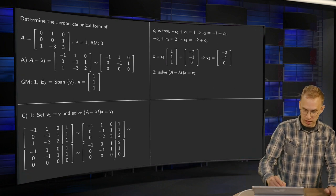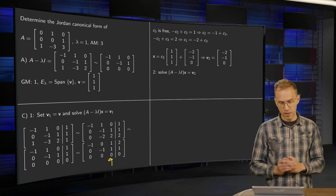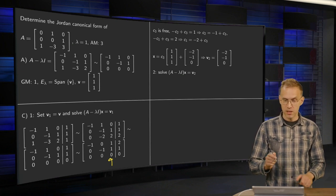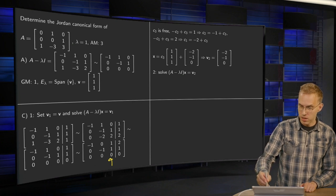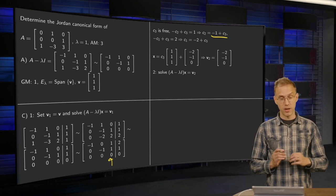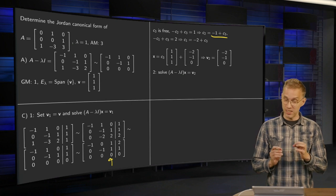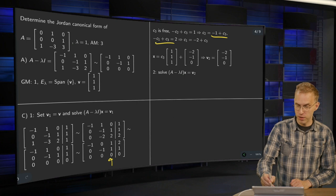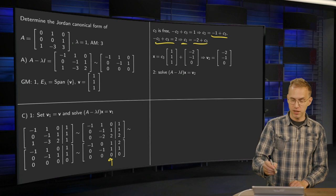And then we solve. C3 is a free variable. The second row gives me 0 times C1 minus 1 times C2 plus 1 times C3 equals 1. So we can express C2 as C3 minus 1. And then the first row gives us C1 equals C3 minus 2.